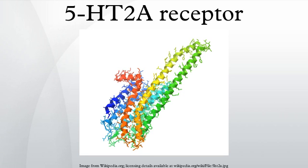In the rat cerebellum, the protein has also been found in the Golgi cells of the granular layer and in the Purkinje cells. In the periphery, it is highly expressed in platelets and many cell types of the cardiovascular system, in fibroblasts, and in neurons of the peripheral nervous system. Additionally, 5-HT2A mRNA expression has been observed in human monocytes.